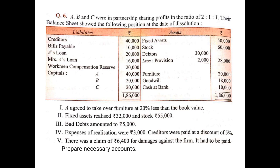After putting up everything in the realization account, compare the debit side with the credit side. If the credit side is more than the debit side, there is a realization profit. If the debit side is more, there is a realization loss. Whether profit or loss, it will be distributed among the partners in their profit sharing ratio.